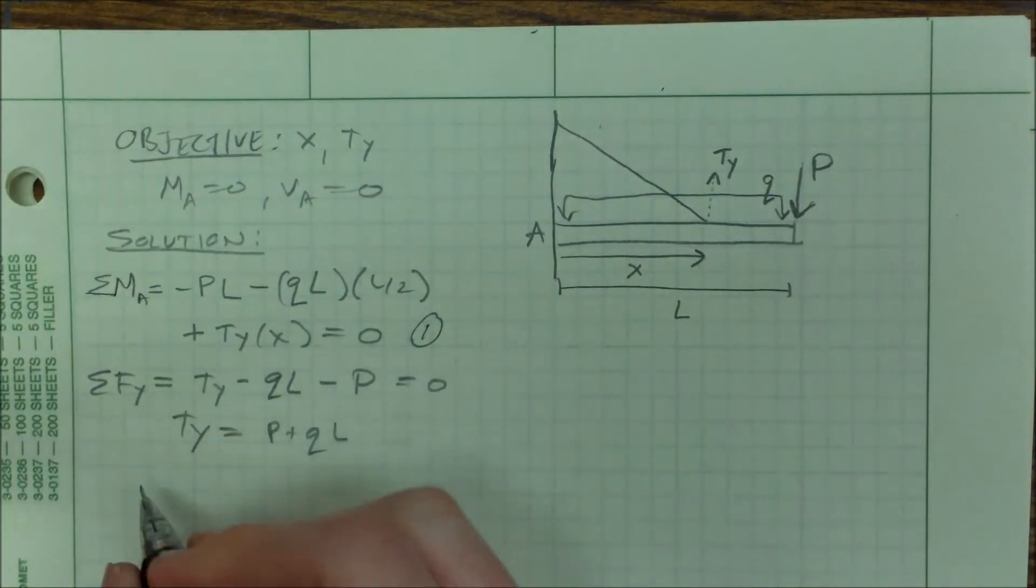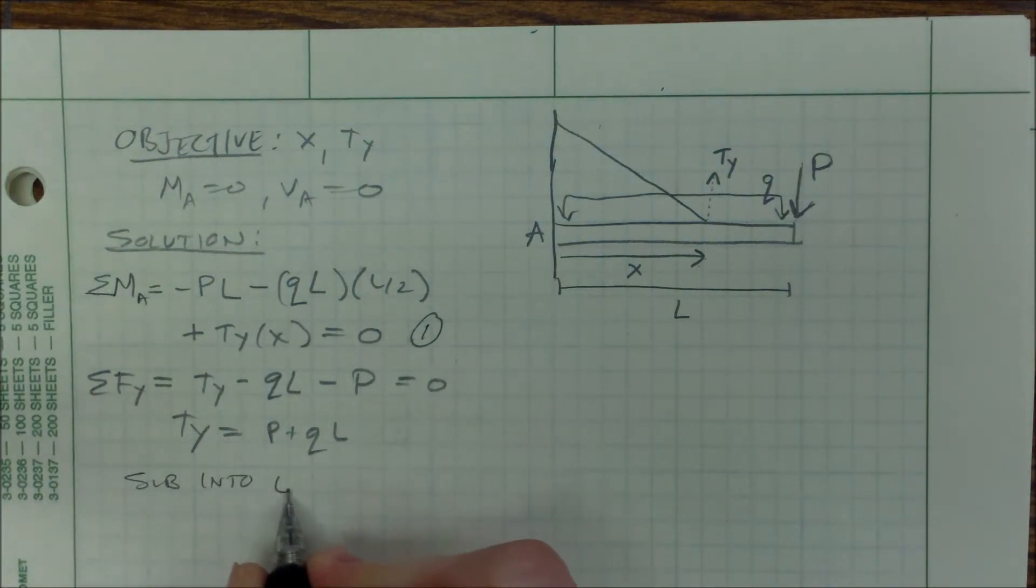TY equals P plus QL. If I call this equation 1, I'll say sub into equation 1.